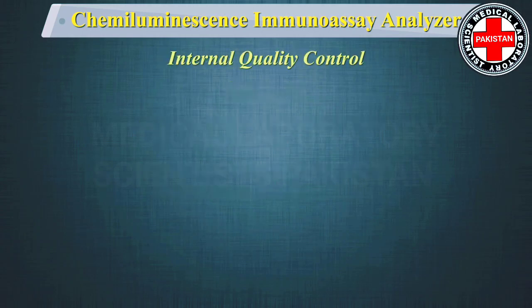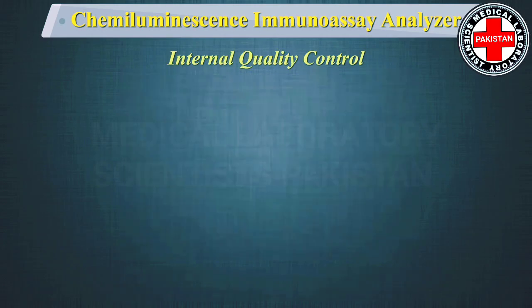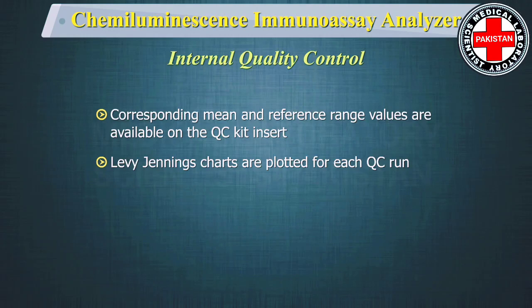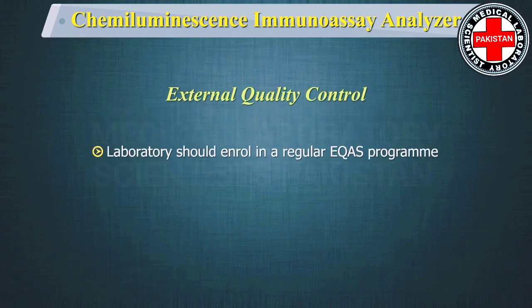For internal quality control of TSH, three levels of quality controls should ideally be run, as clinical decision levels can be hypo, normal, or hyperthyroid. The corresponding mean and reference range values are available on the quality control kit insert for the analyte. A Levey-Jennings chart should be plotted for each quality control run. For more details on quality control, please refer to the training module on quality controls. A laboratory should also enroll in a regular external quality assurance program (EQAS).